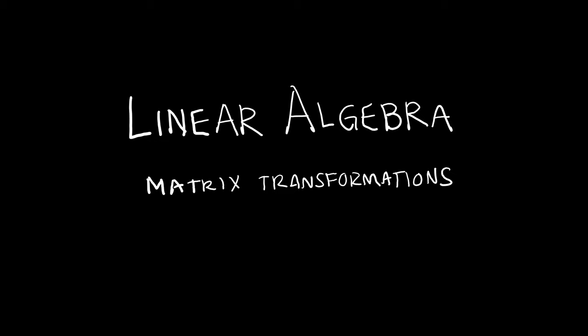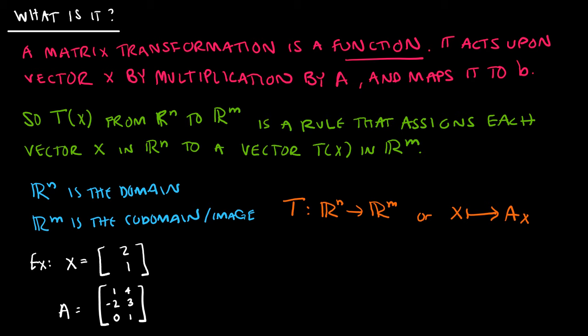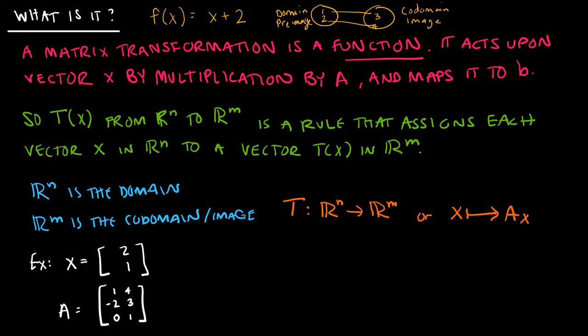In this video, we want to begin to talk about linear transformations, but in order to understand linear transformations, we must make sure we understand matrix transformations. A matrix transformation is a function. For example, if f(x) = x + 2, and 1 and 2 are in the domain or pre-image, then 1 maps to 3 and 2 maps to 4. The other side is called the co-domain or image. A function is simply a mapping of one value to another.